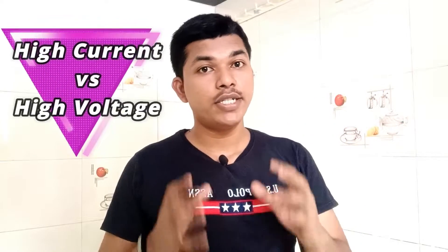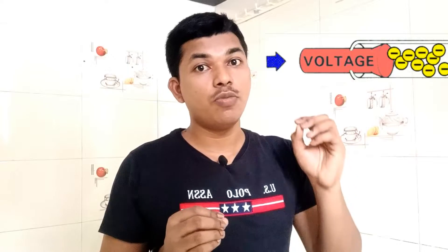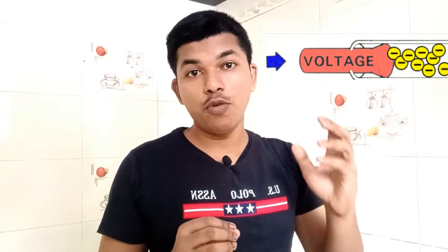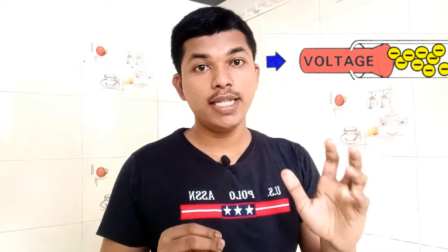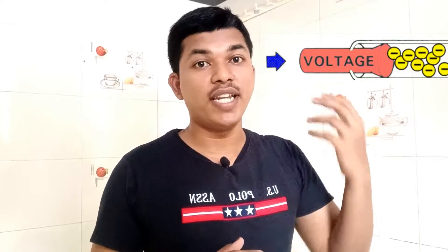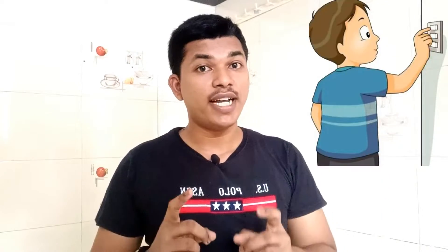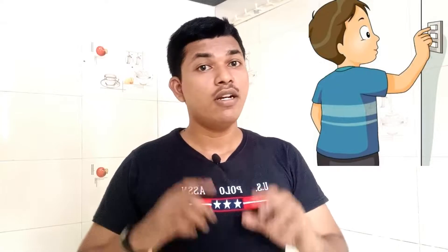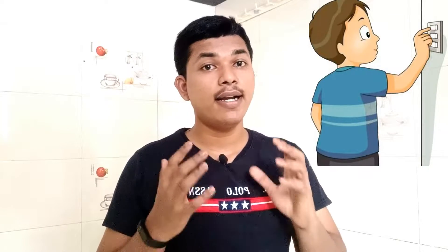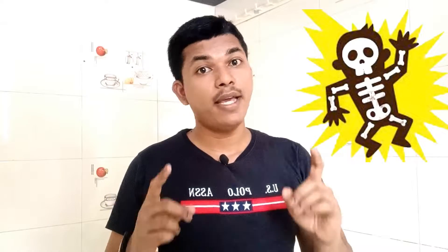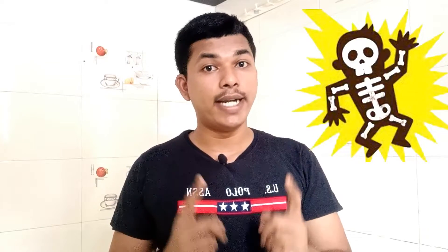The final condition is high current and high voltage. This is more critical than the earlier cases. The number of electrons is high and the force pushing them — that is, the voltage — is also very high. So if we touch a live wire with high current and high voltage, it causes severe damage and may also lead to death.